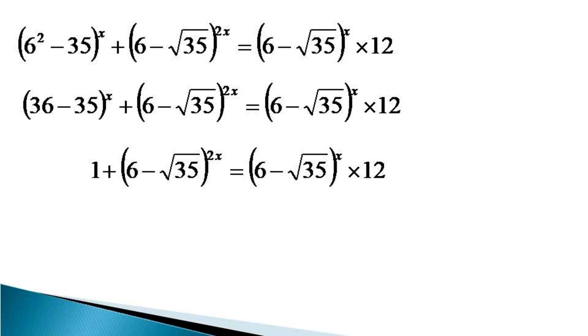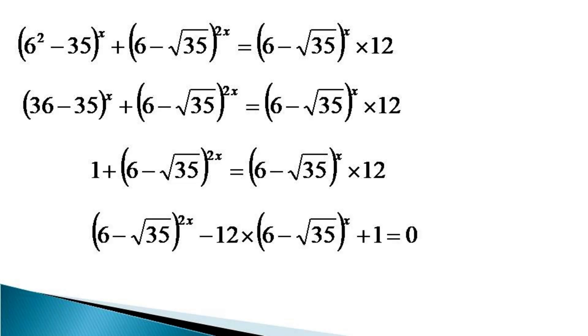We bring all the terms to the left hand side to get the equation in the form of (6 minus √35)^(2x) minus 12 times (6 minus √35)^x plus 1 equals 0.